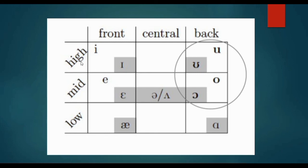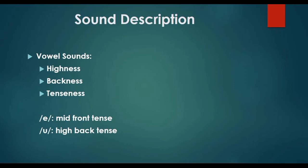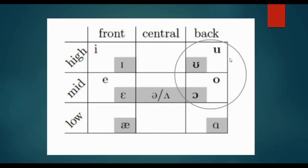Look at this example. The sound /iː/ is high front tense. And /ɪ/ is high front lax. We also have the sound /uː/. According to height, it is high. According to backness, it is back. And according to tenseness, it is tense. Looking at the chart: it is back, high, and tense.